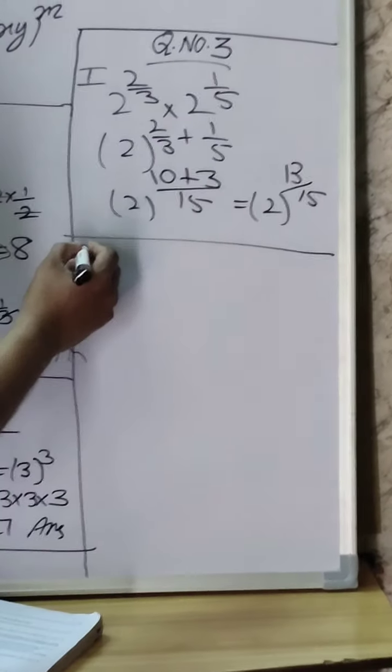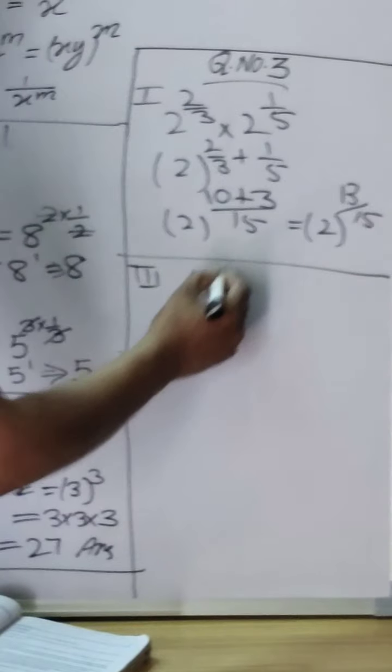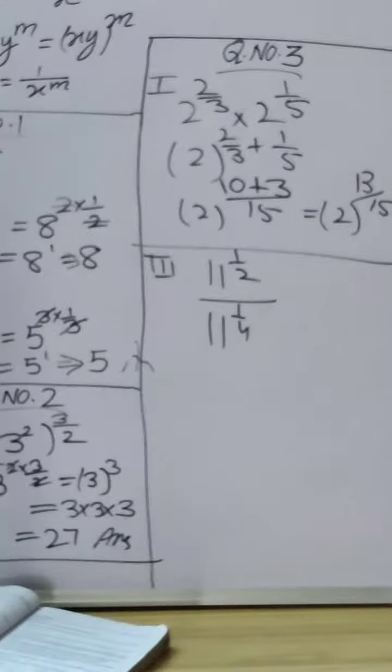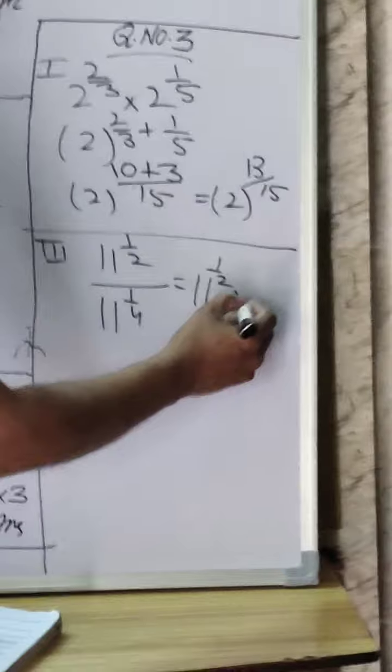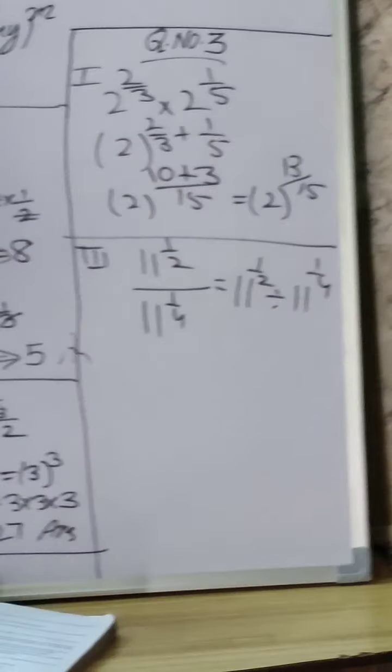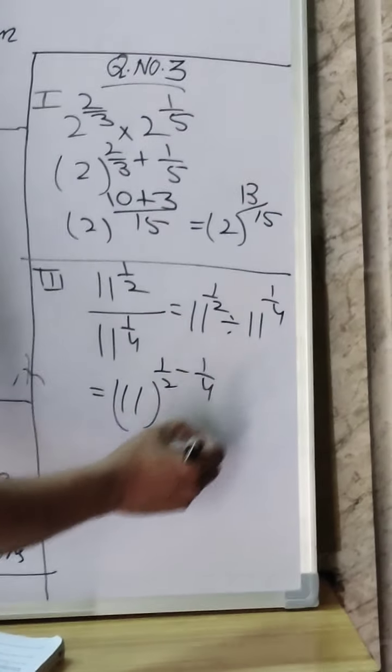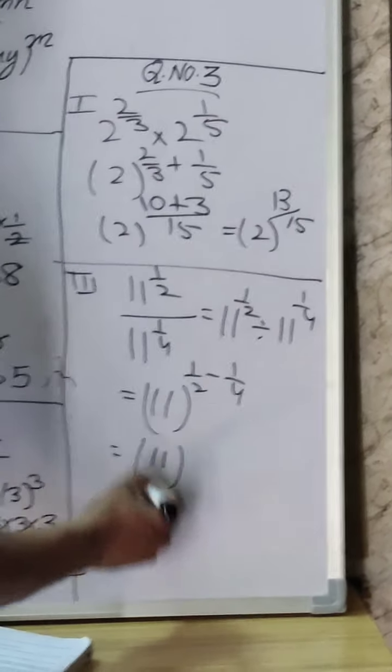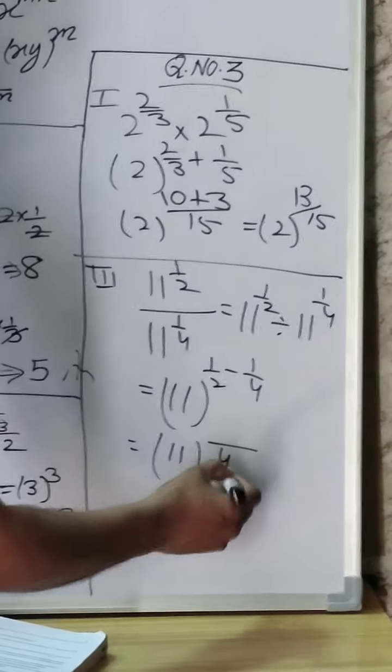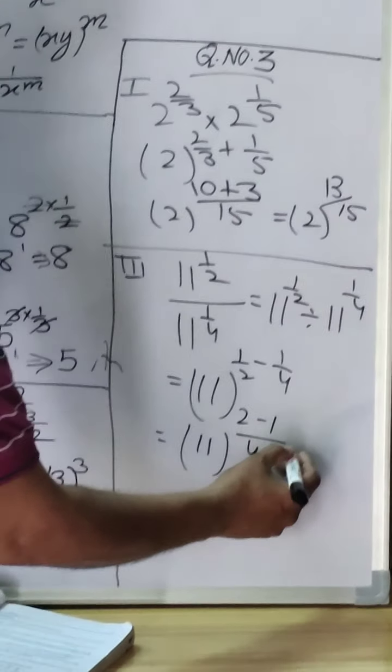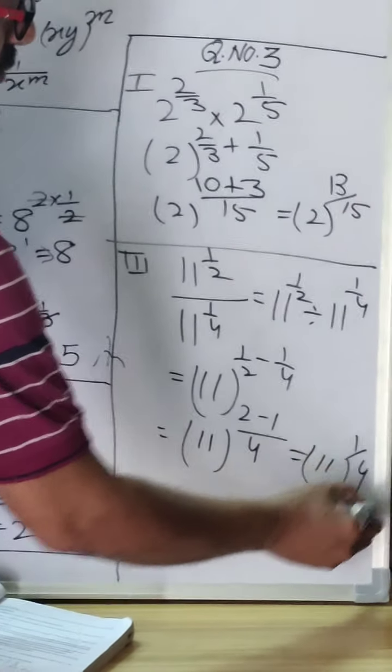Okay, third part is 11 power 1 by 2 upon 11 power 1 by 4. You see, it is divide. If divide is here and base is same, then power will subtract. So 11 power 1 by 2 minus 1 by 4, it is 11 power 1 by 4.